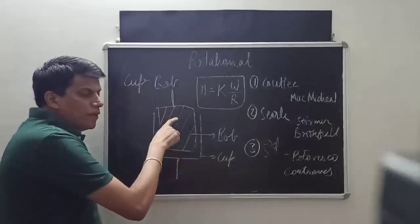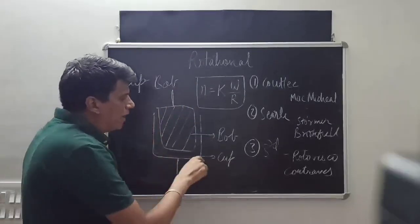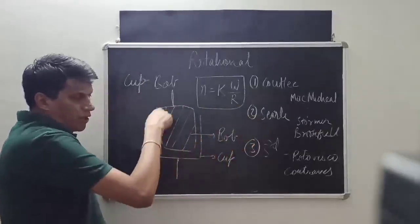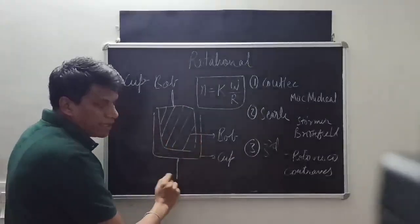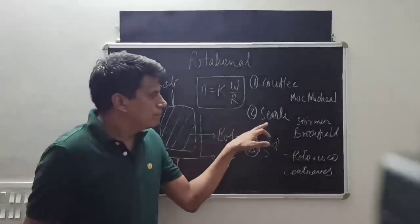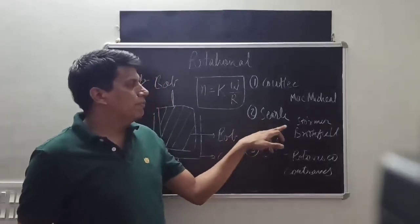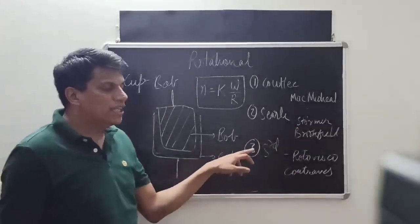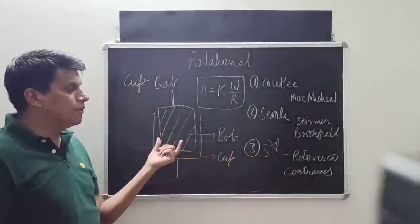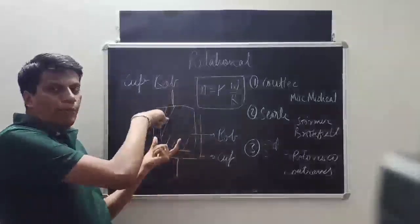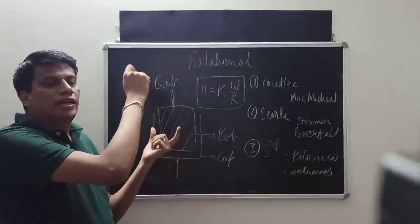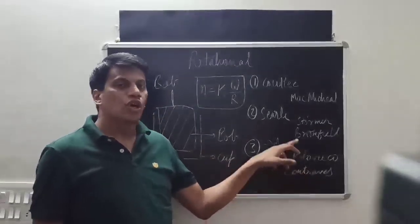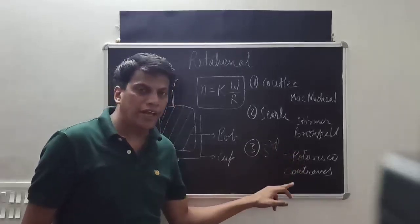In the Searle type, the bob is rotating and measurement is done on the cup. So this inner portion rotates and measurement is done on the cup part. The third type is very important — the Brookfield viscometer and Stormer viscometer — where the bob rotates and measurement is done on the bob itself. The example of this third type is the Roto Visco and Contraves viscometer.